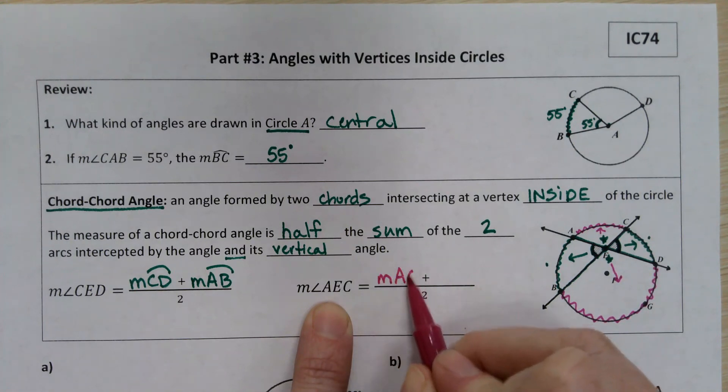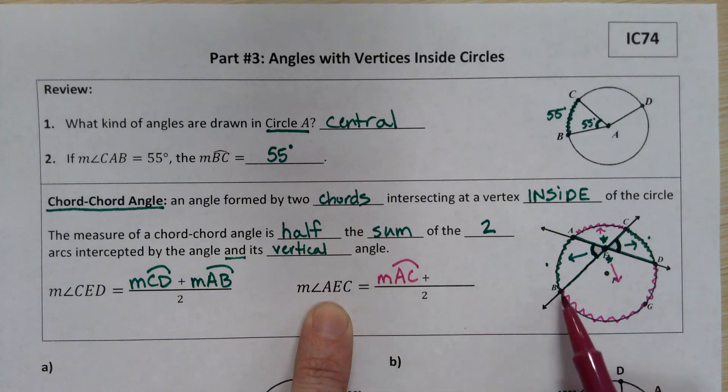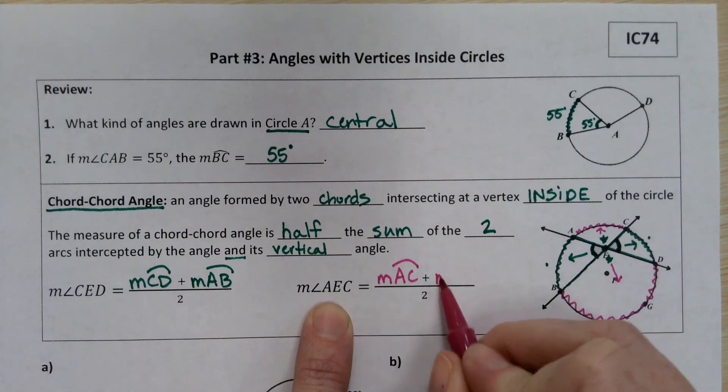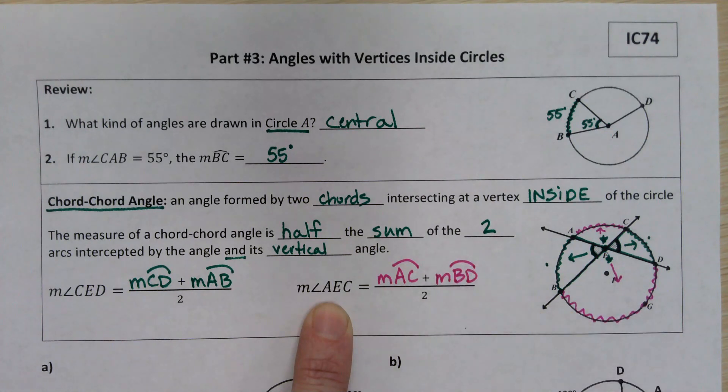We would take the measure of arc AC and add that to the measure of this arc, which looks like it might almost be a major arc, but I think it's just a tad less than a semicircle, so I'm going to stick with two letters to name it. Those would get added together and then divided by two to average out and tell us how big those chord-chord angles are.